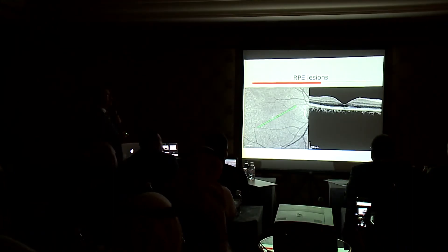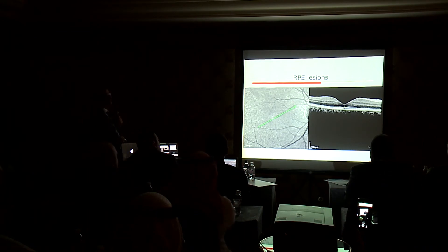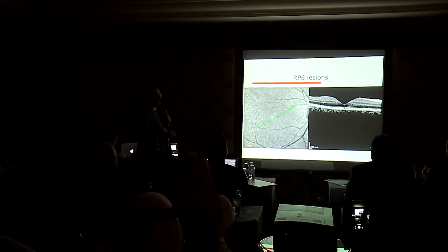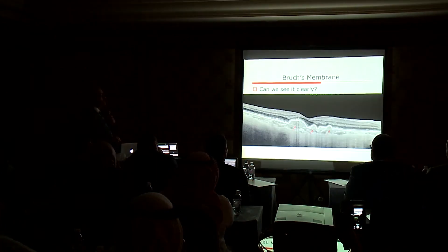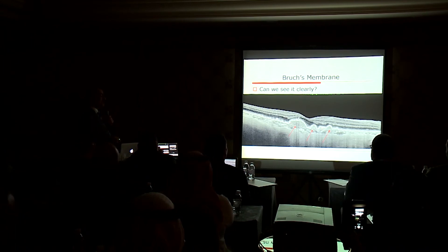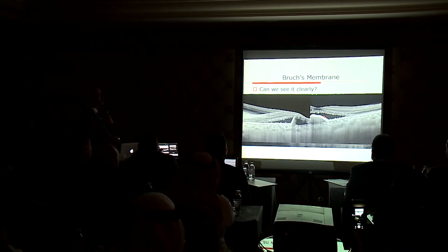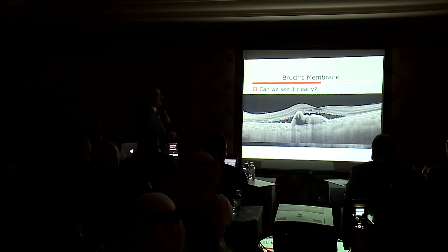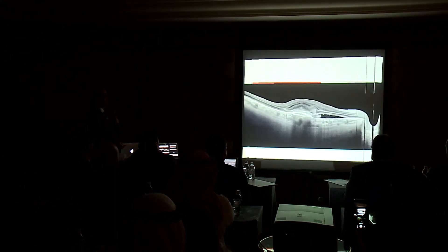Looking at the outer retina: sometimes we get an RPE lesion and the patient is complaining but we don't see anything on fluorescein or fundus picture. Why? Because we have an outer retinal hole, mainly from solar maculopathy or laser pointer burn. With OCT we can see clearly — we can see the drusinoid RPE detachment, the Bruch's membrane, and delineate every layer. We can also detect when a choroidal neovascular membrane is developing, because of the hyper-reflective material under the retinal pigment epithelium with overlying sensory detachment — obviously an occult choroidal neovascular membrane.